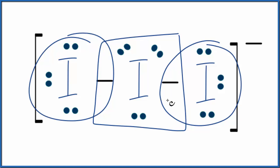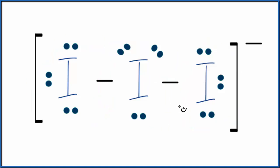That's okay. Iodine can have an expanded octet. So this is the Lewis structure for the I3-.